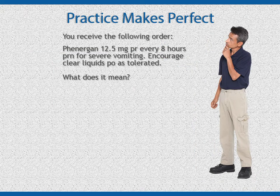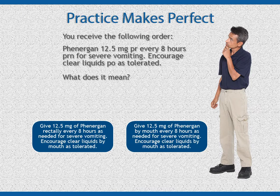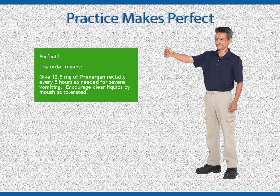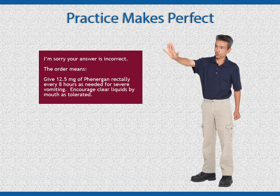You received the following order: Phenergan 12.5 mg PR every 8 hours PRN for severe vomiting. Encourage clear liquids PO. What does it mean? The order is for 12.5 mg of Phenergan given by the rectal route every 8 hours as needed for severe vomiting. Encourage clear liquids by mouth.